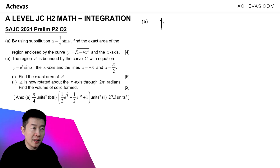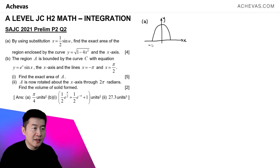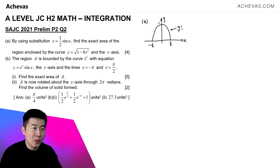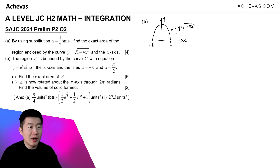This is the y-axis and here is the x-axis. The graph is going to look something like this — there's a turning point, then coming back down. This is when x is equal to minus 1/2, and this is when x is equal to 1/2. Here is when x is equal to 1. This is the graph of y = √(1 - 4x²).